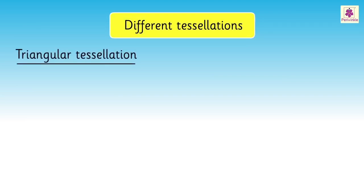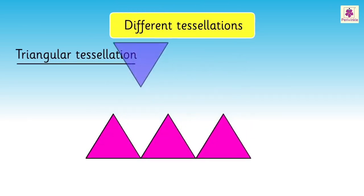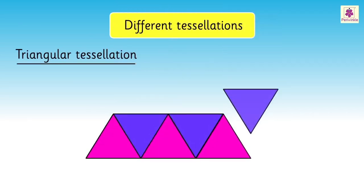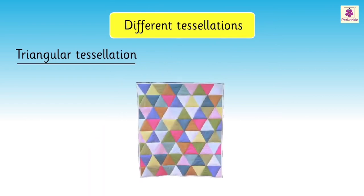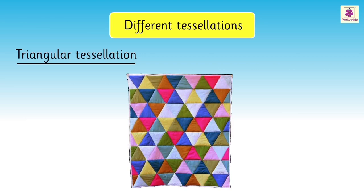Now, let us study different tessellations. Triangular tessellation is where triangles are arranged in a pattern. This quilt is a tessellation made of triangles.